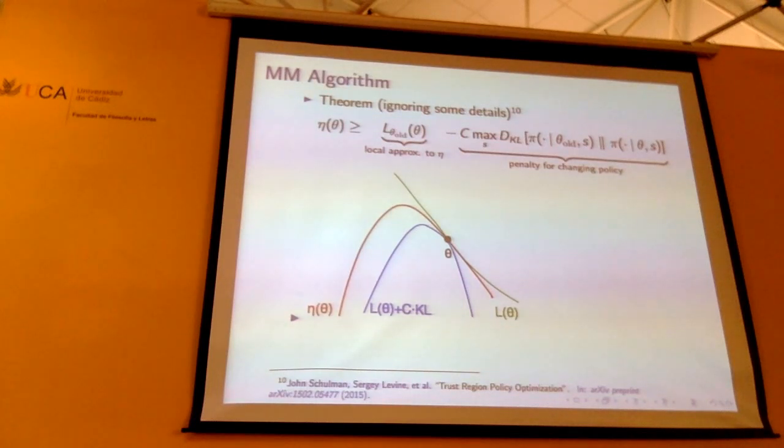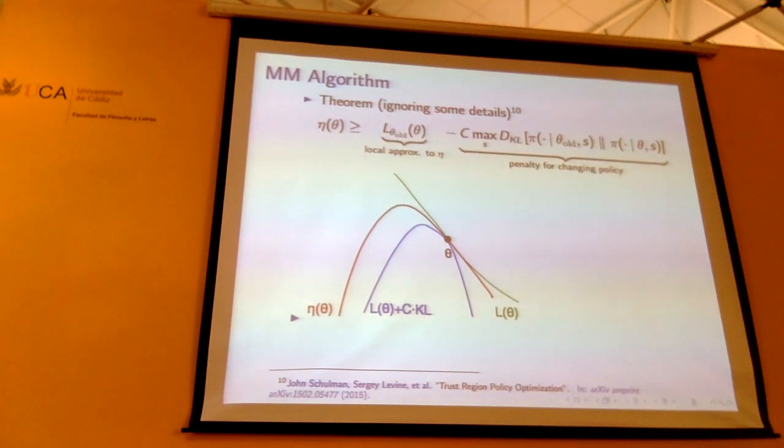This is called a minorization-maximization algorithm, and the EM algorithm is another instance of this.